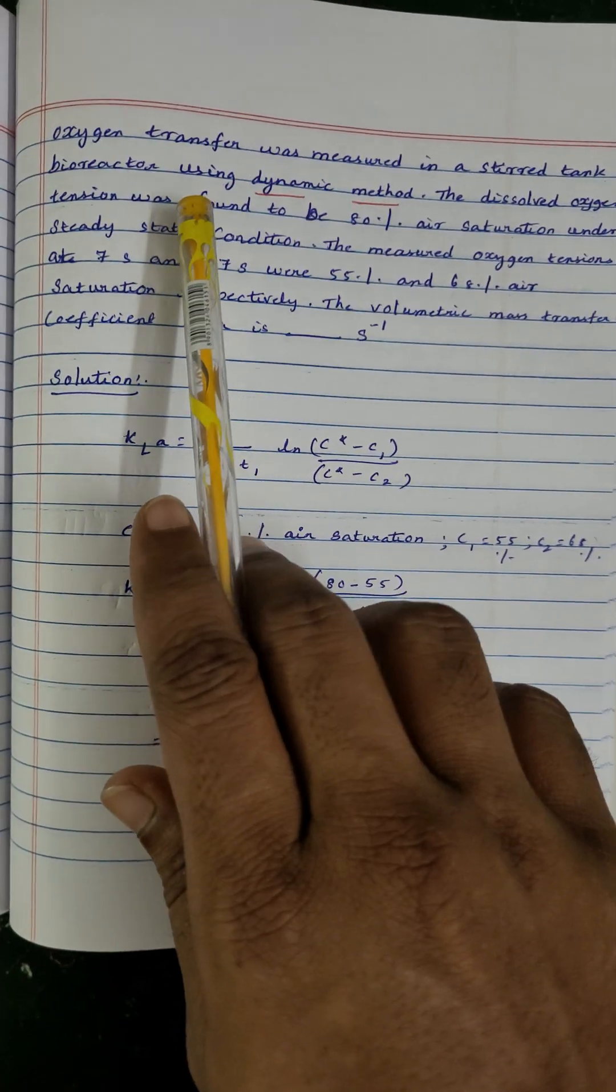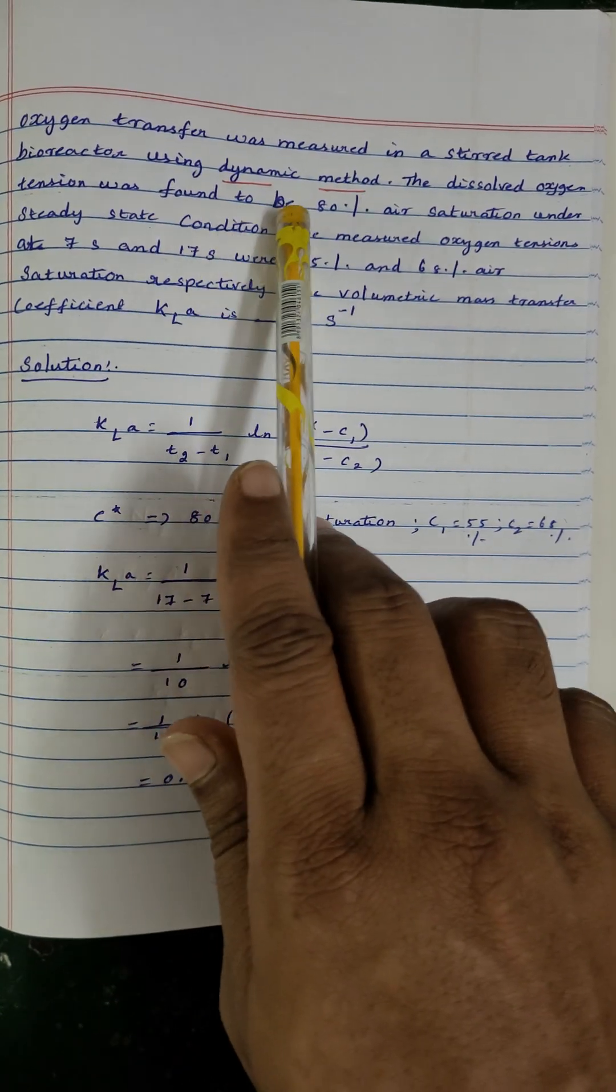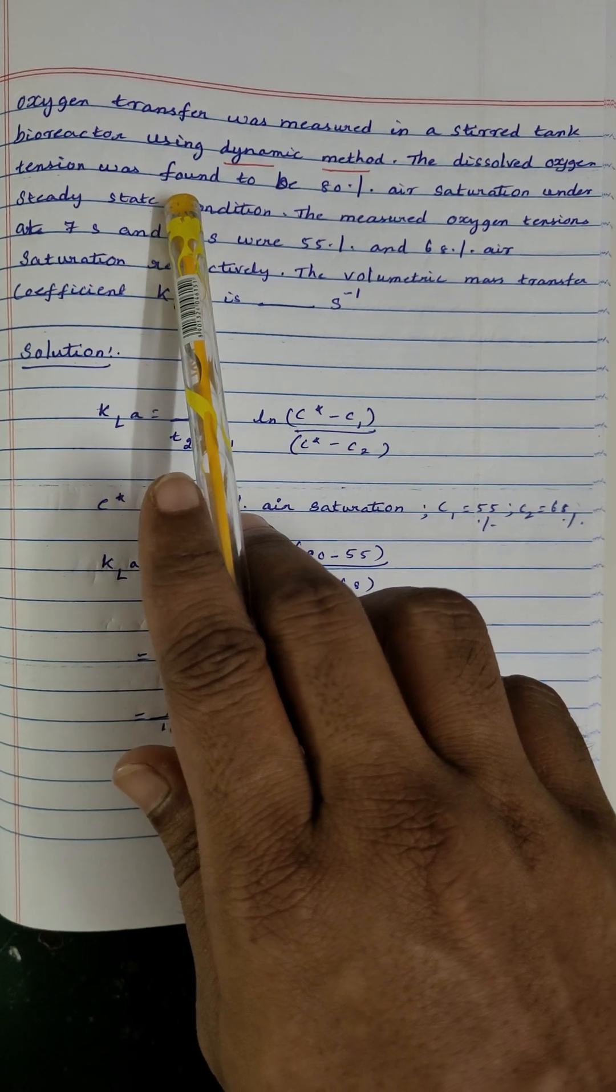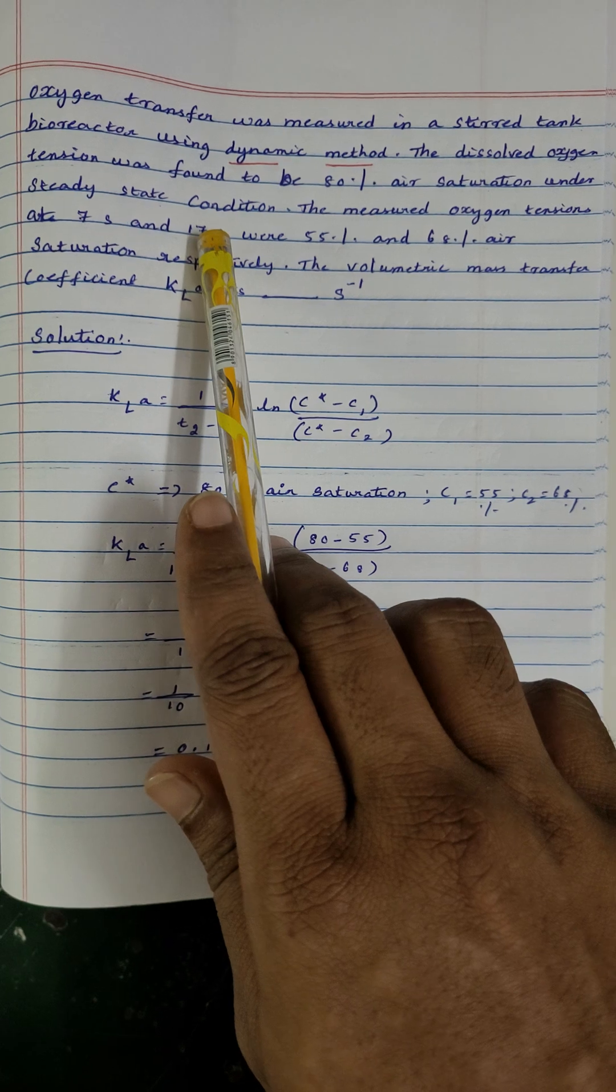The problem which is given is oxygen transfer was measured in a steel tank reactor using dynamic method. The dissolved oxygen tension was found to be 80% air saturation under steady state condition. The measured oxygen tension at 7 seconds and 17 seconds were 55% and 68% air saturation respectively.